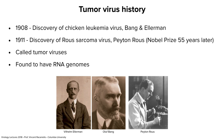Why it took so long we'll see later when we talk about transformation and oncogenesis. These were eventually called tumor viruses, as they cause cancers in animals. They were eventually found to have RNA genomes — and then called RNA tumor viruses. There are also DNA viruses that cause tumors and cancers — called DNA tumor viruses. We're going to talk about them separately, but today we're going to talk about the RNA tumor viruses.